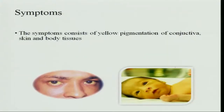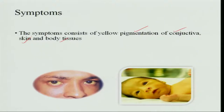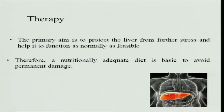The symptoms of jaundice include yellow pigmentation of the conjunctiva. Because the conjunctiva are white in color, we can see the yellow coloration very easily. It is also visible on the skin and body tissues, though less easily recognized there. The conjunctiva are the best site for recognition. You can see the child who is yellow in color.